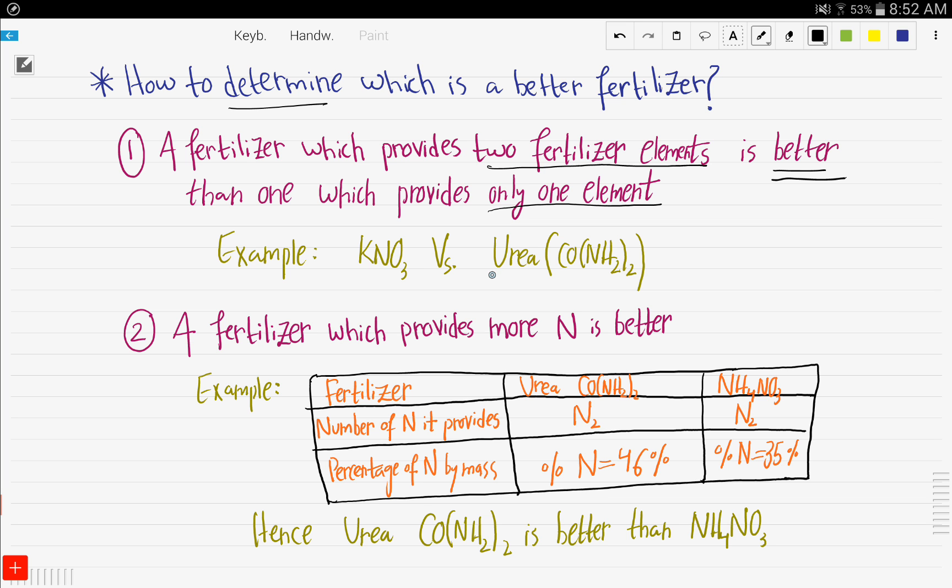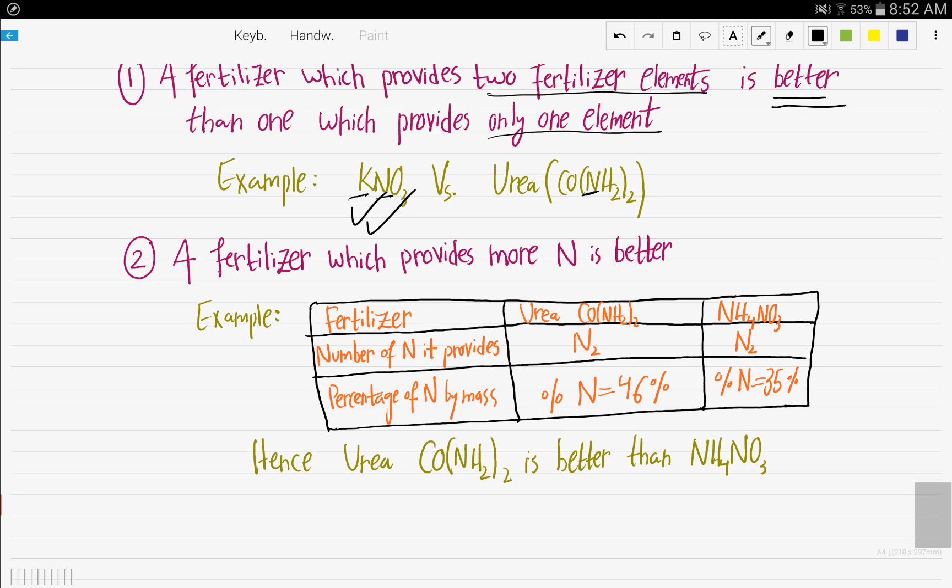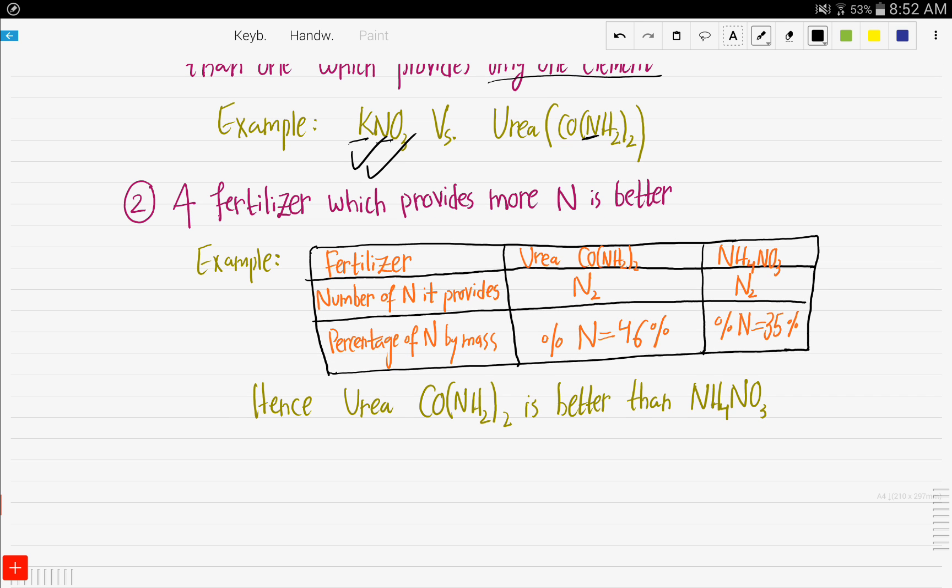So, potassium nitrate versus urea. As you can see here, it provides potassium and nitrogen, so two fertilizer elements, whereas urea only provides the nitrogen element. So potassium nitrate wins and is the one that you should be buying.